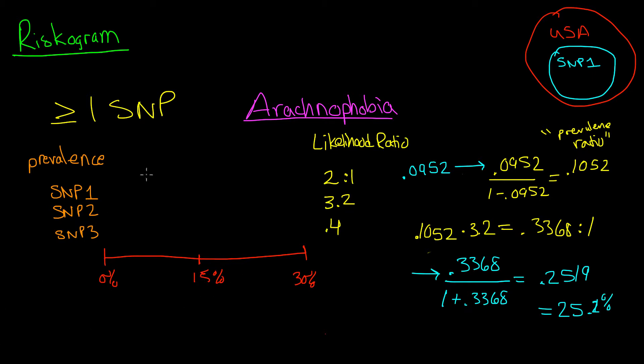So again, we started out with a prevalence of about 5%. And then we went to SNP1, which was 9.52%. And now we found that with SNP2, we're going to 25.2%.